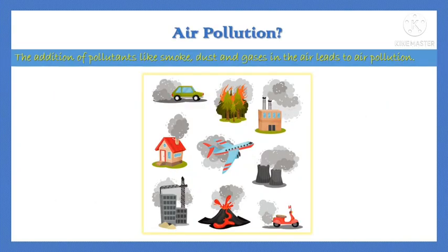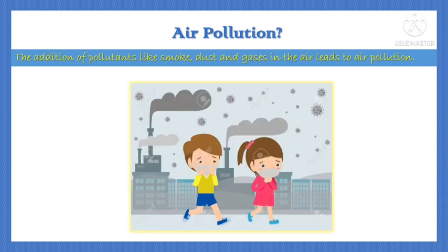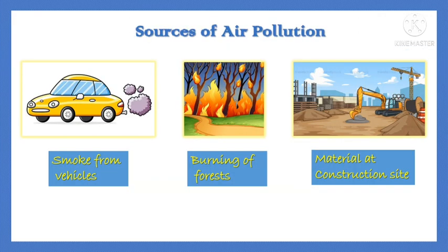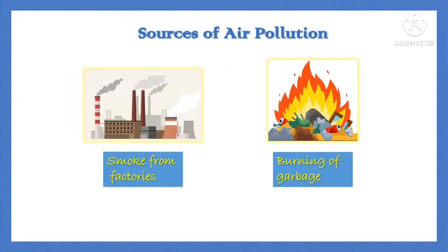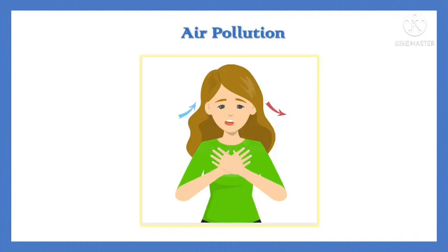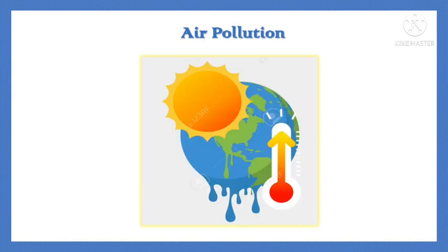The addition of pollutants like smoke, dust and gases in the air leads to air pollution. Some of the sources of air pollution are smoke from vehicles, burning of forests, material at construction sites, smoke from factories and burning of garbage. Air pollution causes breathing problems in humans and animals, and may also cause serious diseases like asthma. Air pollution also results in an increase in the temperature of the atmosphere, leading to changes in weather conditions.